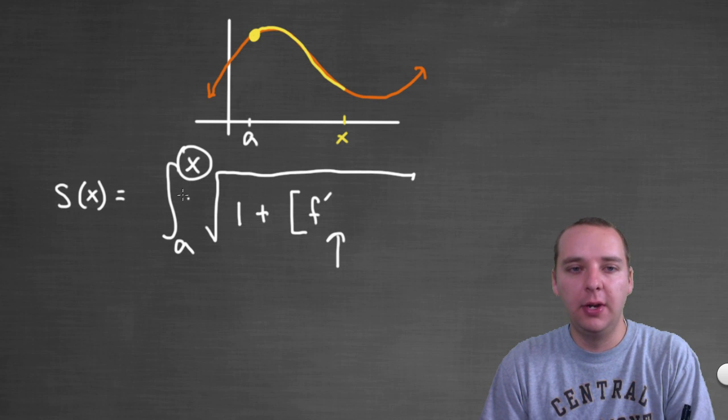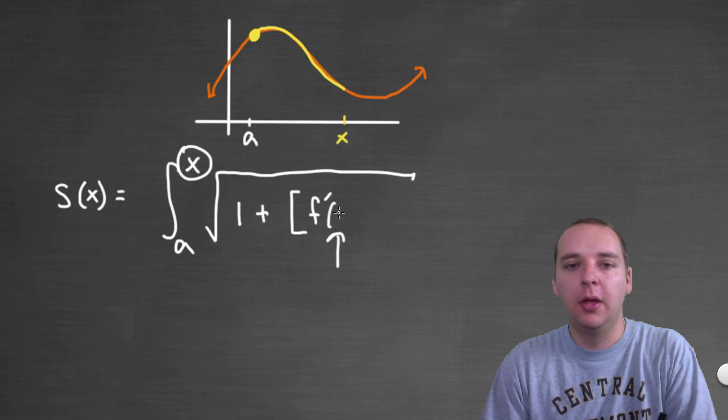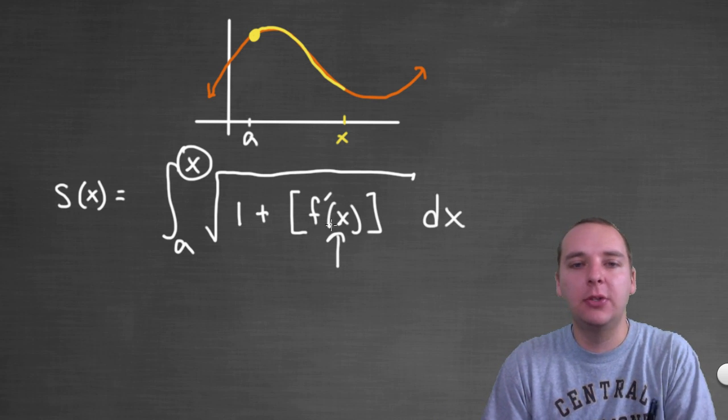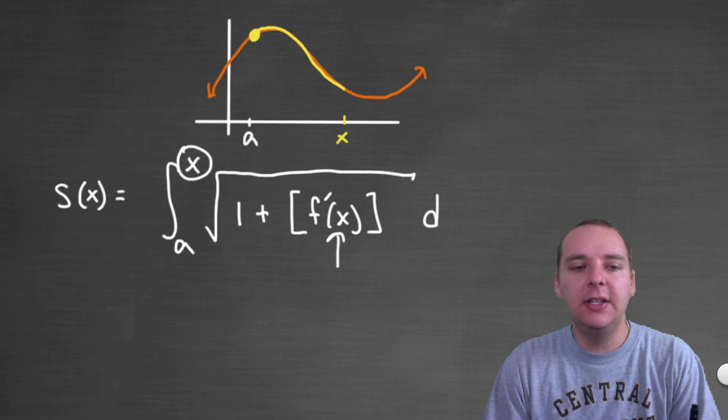Meaning, if you're integrating from a to x, you can't have 1 plus f prime of x squared dx. That just can't happen, so don't write this down, this is not correct. Because you have a function of x integrated up to x. Now it turns out this is an easy fix, very easy fix.